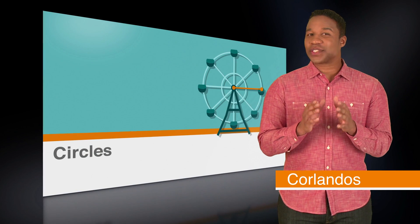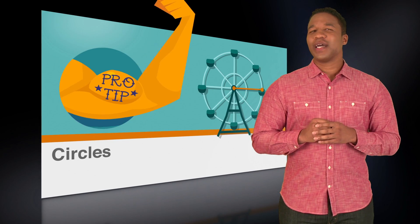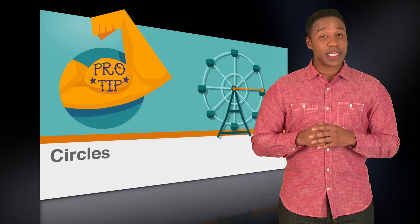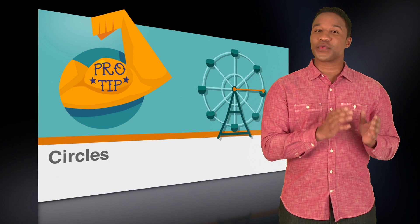One thing that the ACT might ask you to do is find the area of a circle. Here's a pro tip. All you need to know is the circle's radius, and you can figure out the area pretty quickly. And it works the other way around too. If you know the area, you can always find the radius.